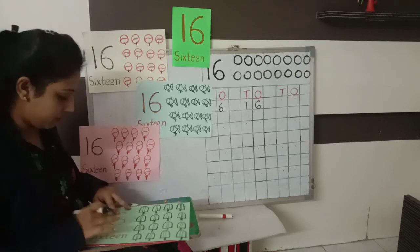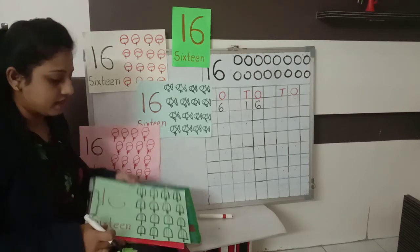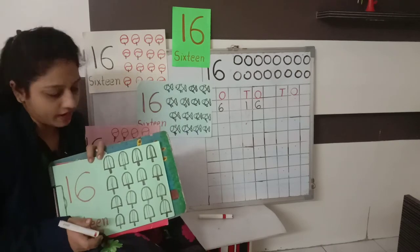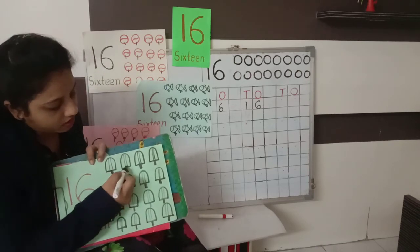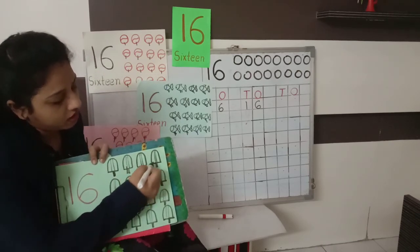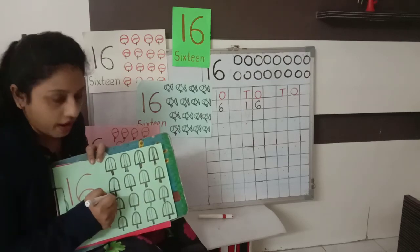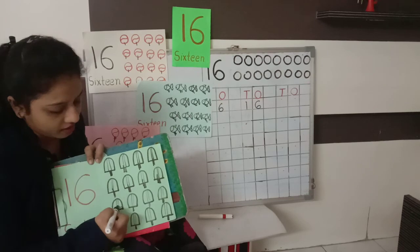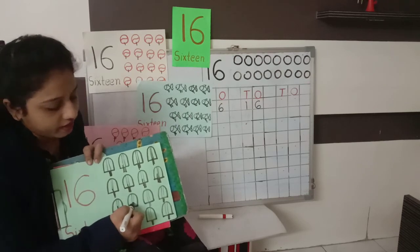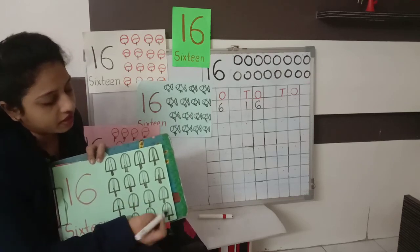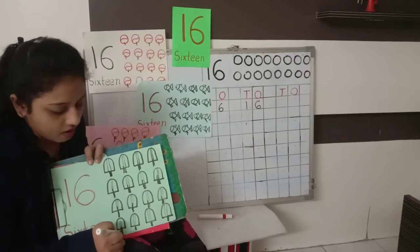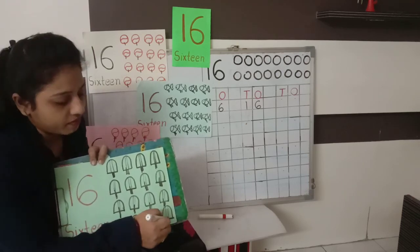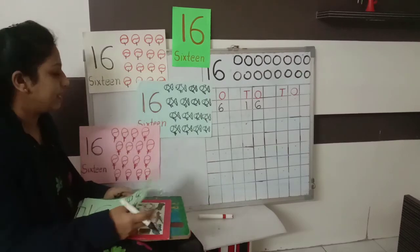Now see, what are these? Ice cream. This is candy ice cream. Let's count how many ice cream are here. 1, 2, 3, 4, 5, 6, 7, 8, 9, then 1-0, 10; 1-1, 11; 1-2, 12; 1-3, 13; 1-4, 14; and 1-5, 15; and 1-6, 16.